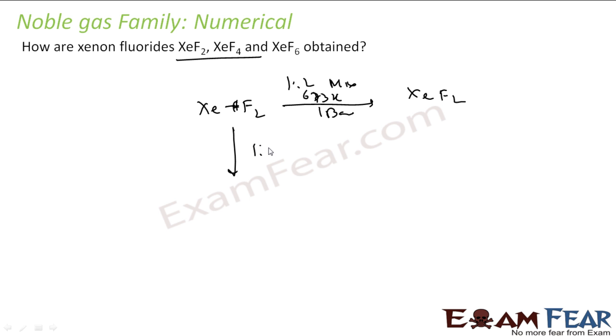Now you have 1 is to 5 mixture of xenon and fluorine, 873 Kelvin temperature at 7 bar pressure, you get XeF4, that is xenon tetrafluoride. You have 1 is to 20 mixture of xenon and fluorine, 573 Kelvin temperature and high pressure of 60 to 70 bar, you get XeF6, that is xenon hexafluoride.